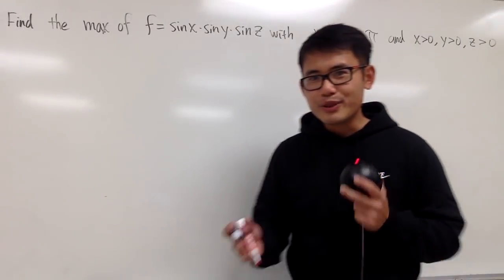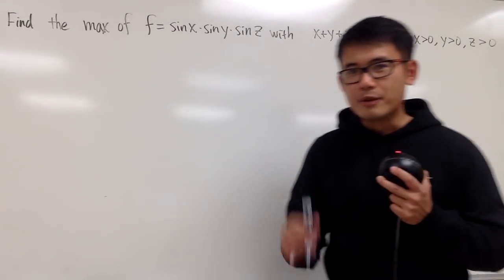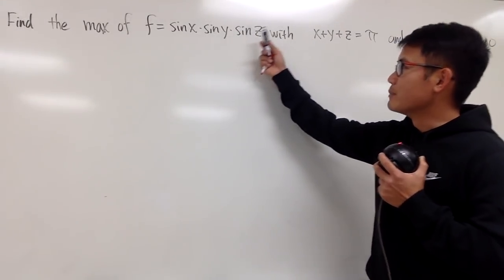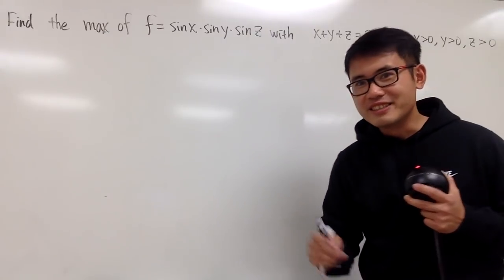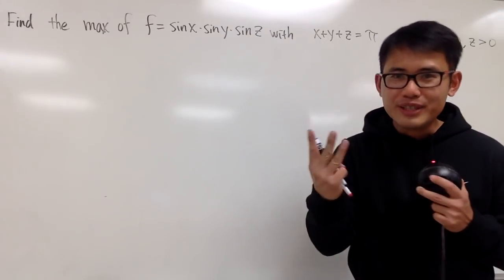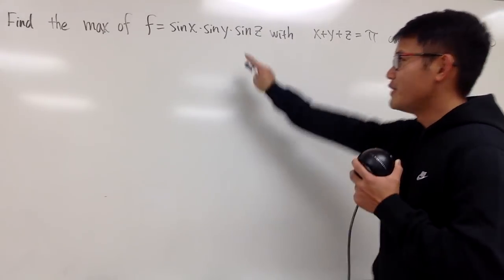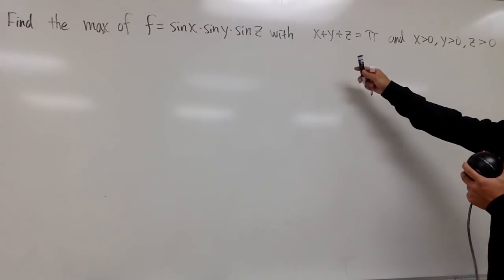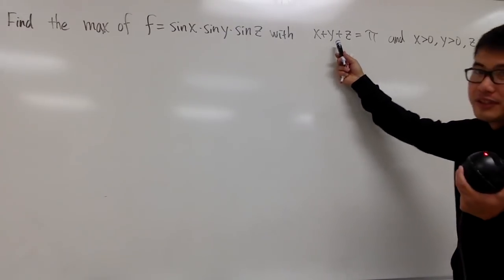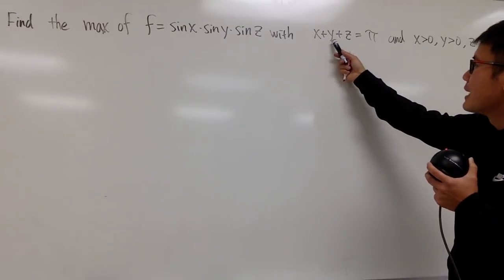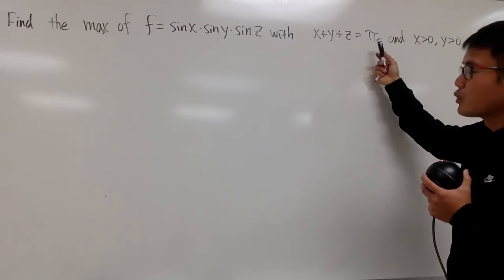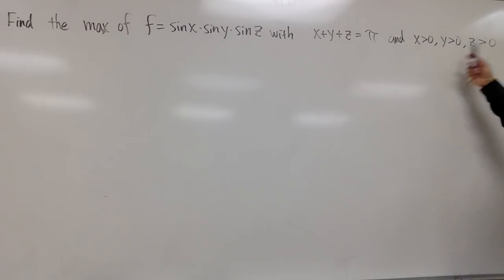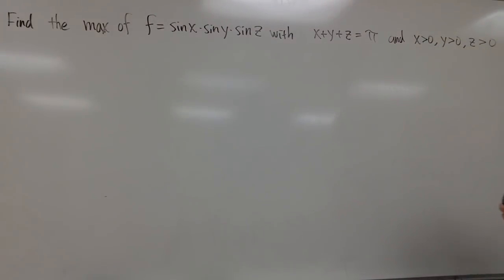In this video, I'll show you guys how to find the maximum value for sin x times sin y times sin z. Yes, this is Calculus 3, because there are 3 variables. With the condition — actually this is a constraint — x plus y plus z is equal to pi, and x, y, z are all positive.